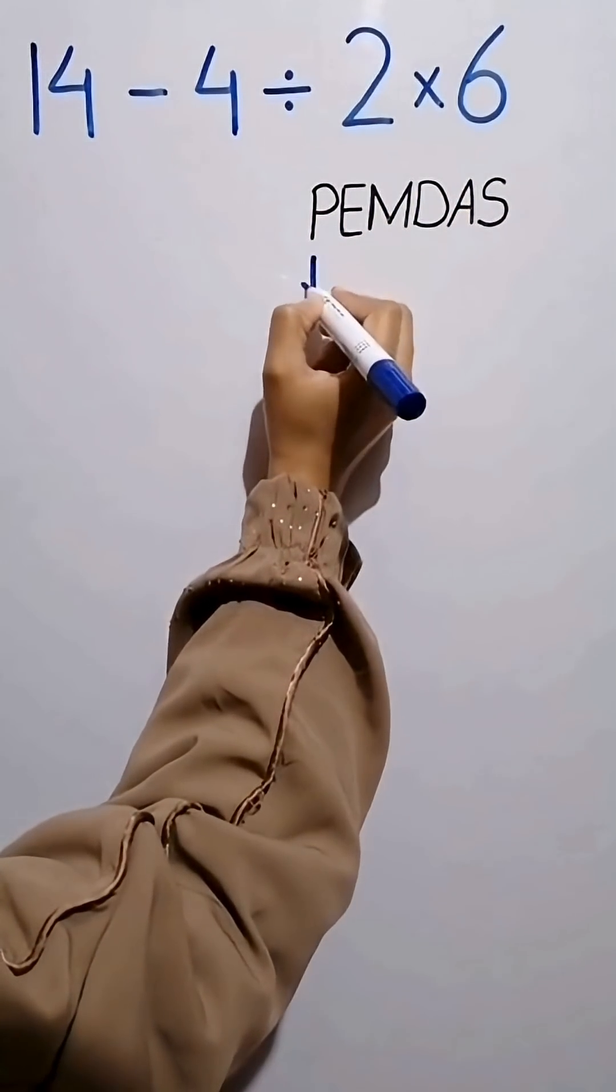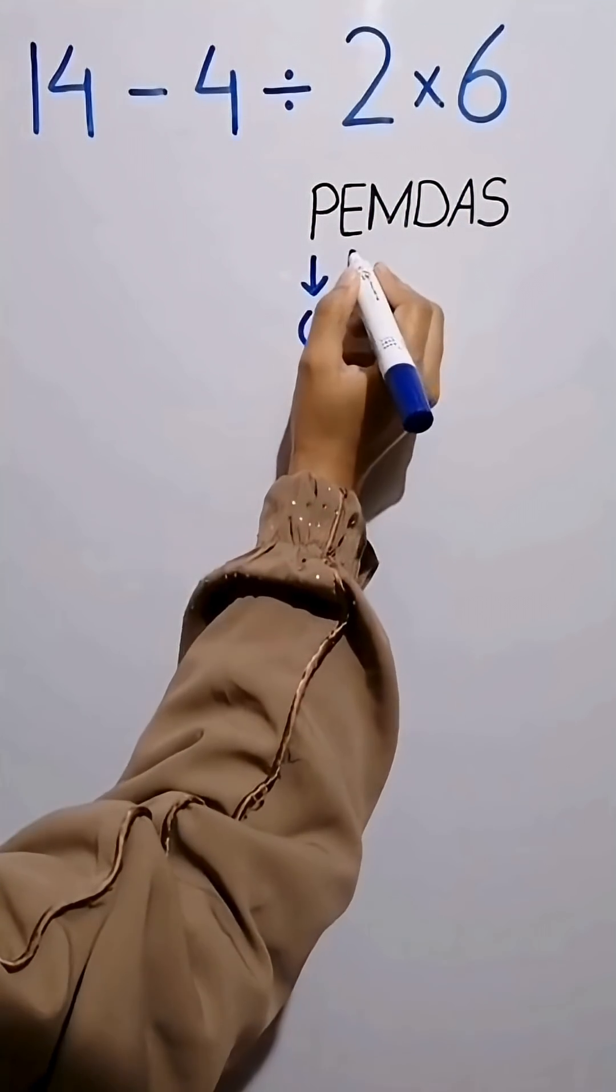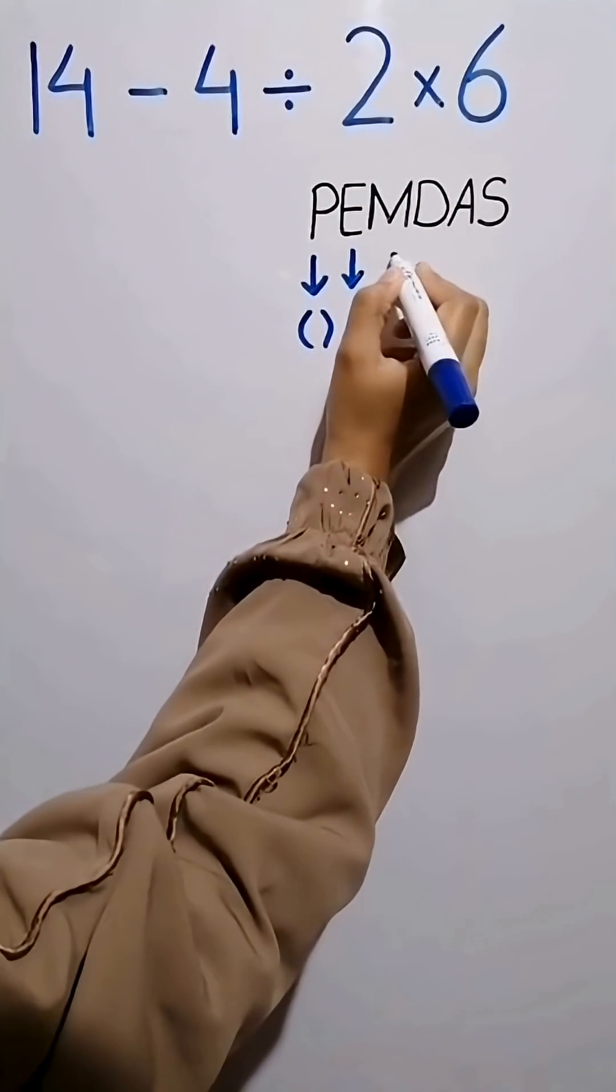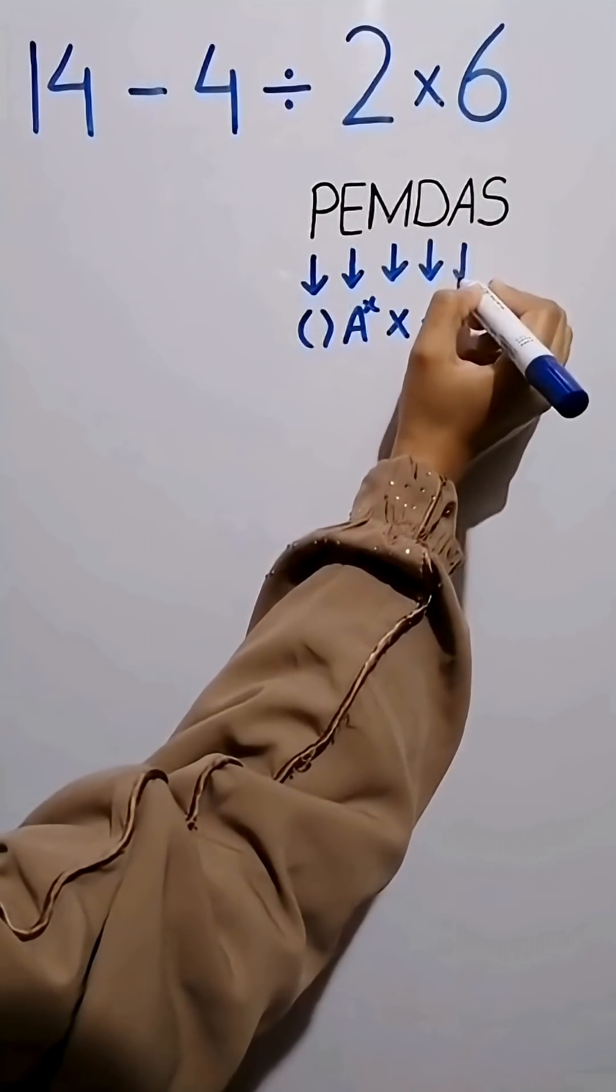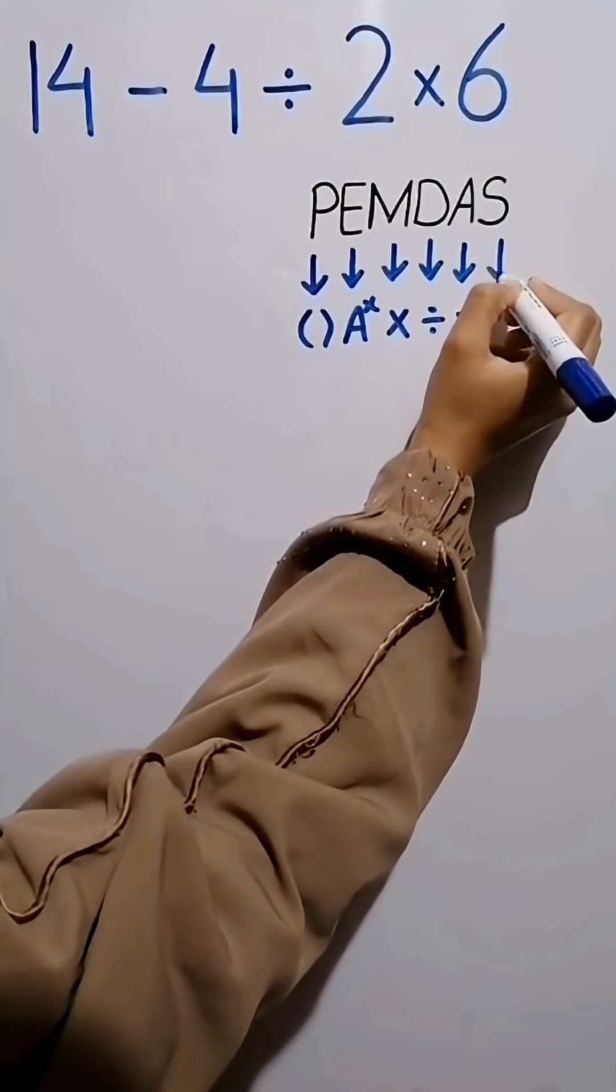In this rule, P stands for parentheses, E stands for exponent, M stands for multiplication, D stands for division, A stands for addition, and S stands for subtraction.